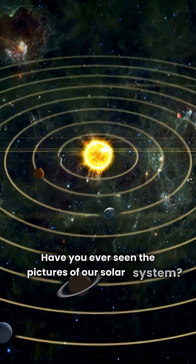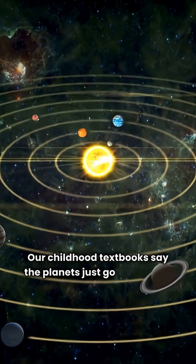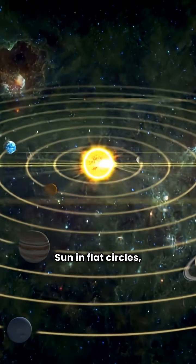Have you ever seen the pictures of our solar system? Our childhood textbooks say the planets just go around the sun in flat circles, like a merry-go-round.